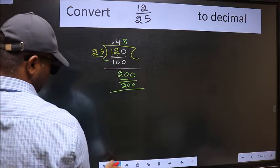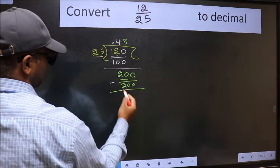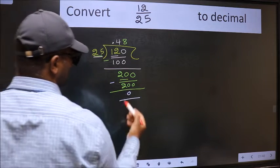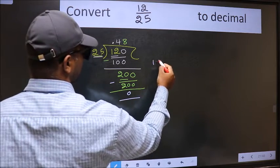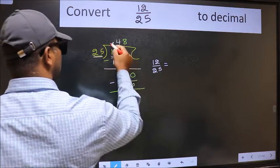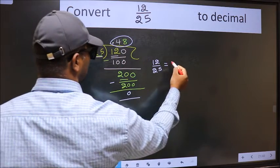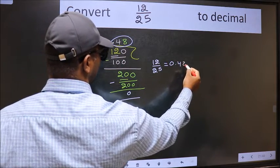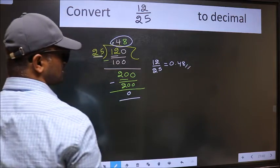Now we should subtract. We got 0. Therefore, the decimal of 12 by 25 is 0.48. This is our answer.